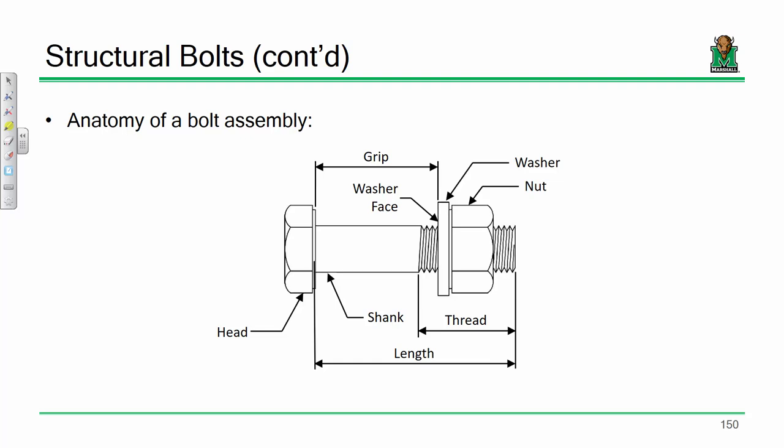Here's the anatomy of a bolt assembly — the bolt, the nut, and the washer. I'm not going to make you memorize every term, but there is one important distinction: when a bolt is sheared, do you shear through the shank or through the threads? That determines how strong the bolt is and ultimately how many bolts you need for a given connection.